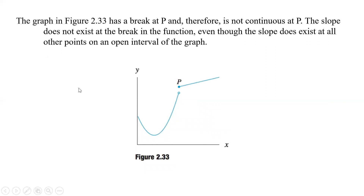The same issue applies when there is a break at p — the function is not continuous there. Going from the left, we'd have to pick up the pen and go the other direction, so it doesn't exist at the break, even though the slope exists at all other points on the open interval of the graph.